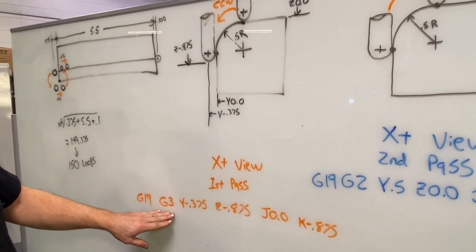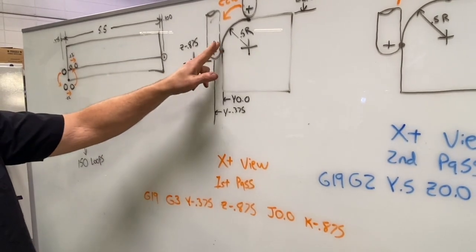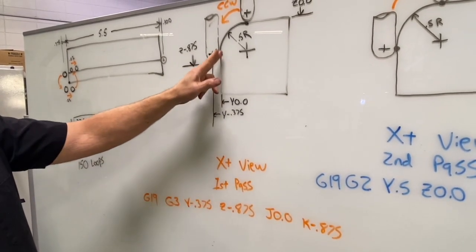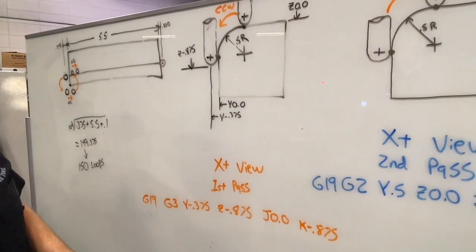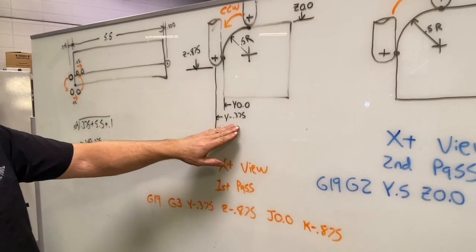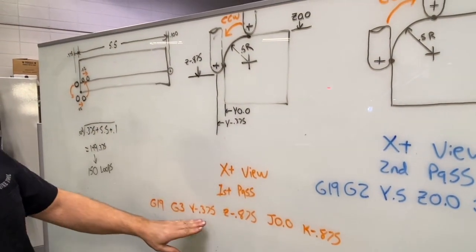And then we're going to do counterclockwise arc moving to this Y position. So the edge of the part being Y zero, we're programming the center line of that ball, that's going to position it at Y negative .375, the radius of our three-quarter inch ball nose.